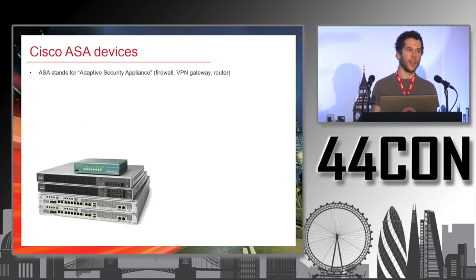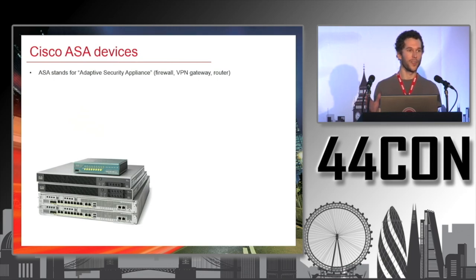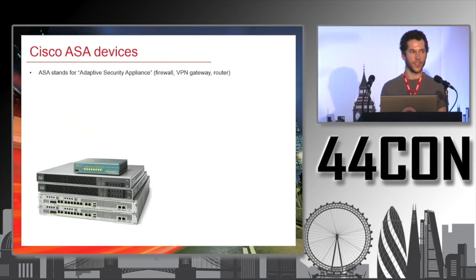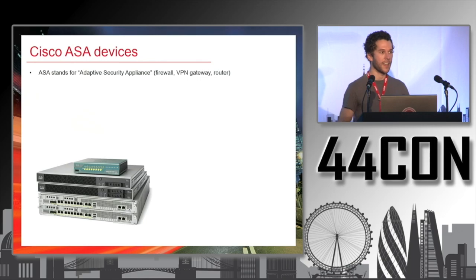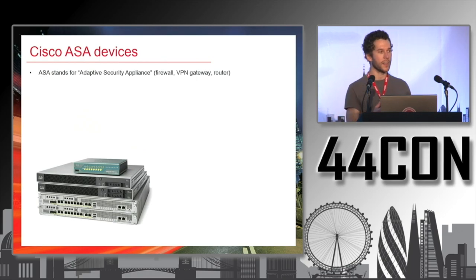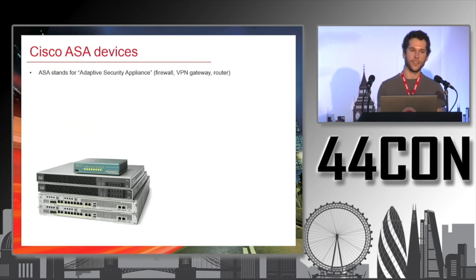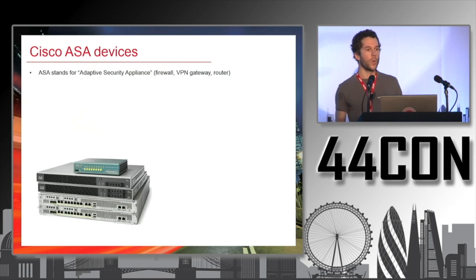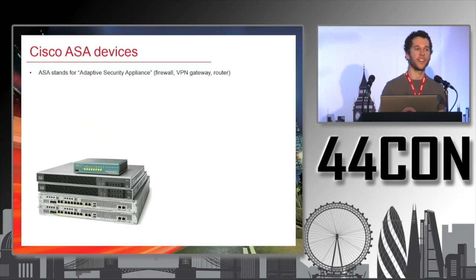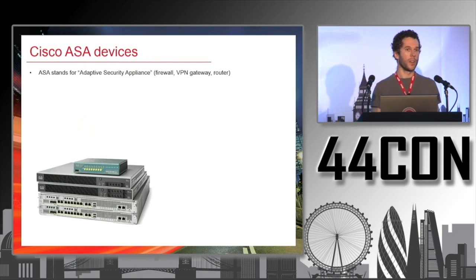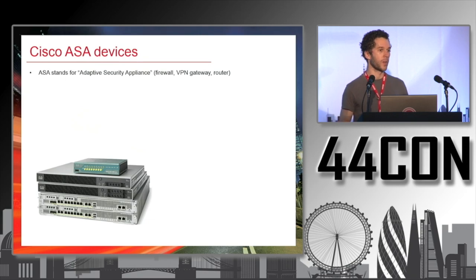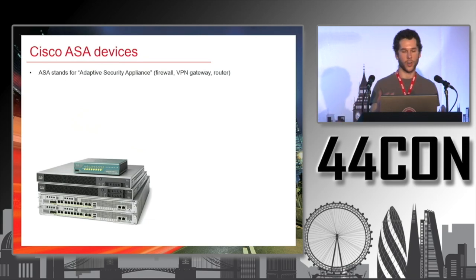So what is a Cisco ASA? ASA stands for Adaptive Security Appliance. It's basically a firewall, a router, a VPN gateway. Most probably, you have one in your company network. They are used to establish a VPN and to access the internal network. If you use AnyConnect, that's what you're connecting to — an ASA firewall.